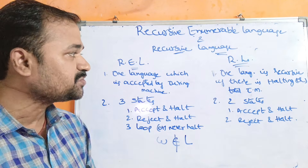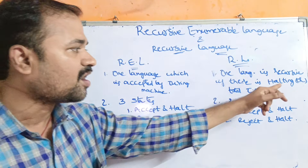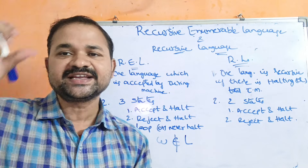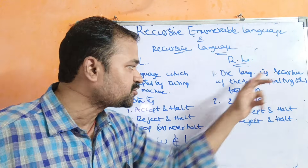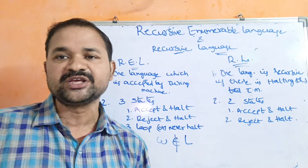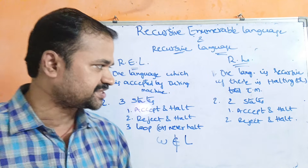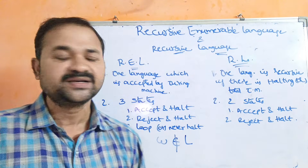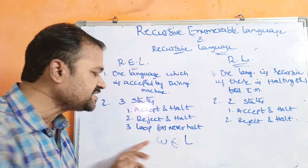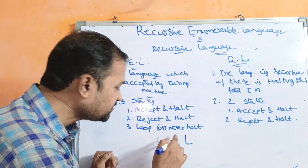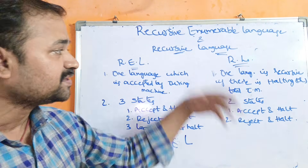Now let us see about recursive language. A language is recursive if there is a halting or total Turing machine. So halting Turing machine or total Turing machine means it will produce only two states. The first state is halt and accept. The second state is halt and reject. If the string belongs to the language then it is accepted by the Turing machine. If the string doesn't belong to the language then the corresponding string is rejected by the Turing machine.